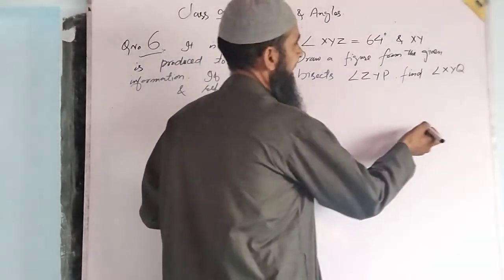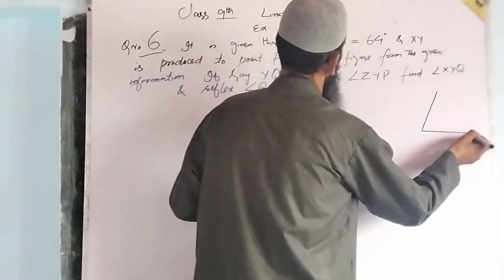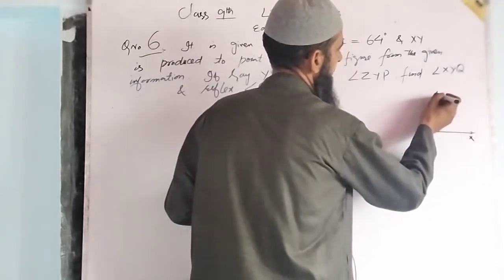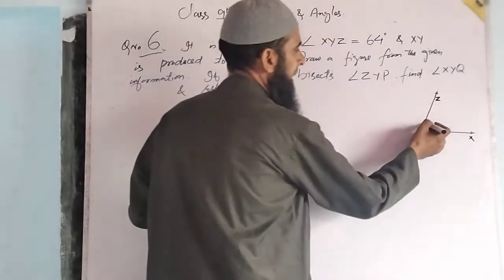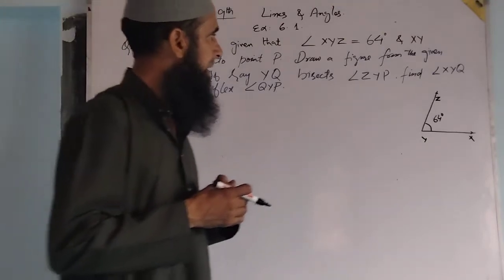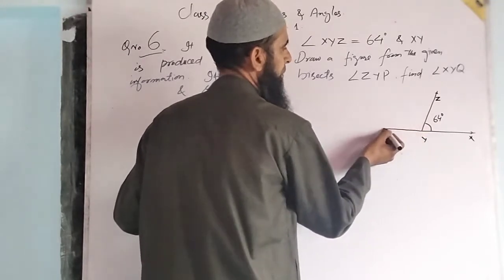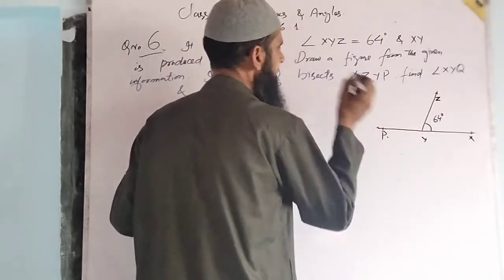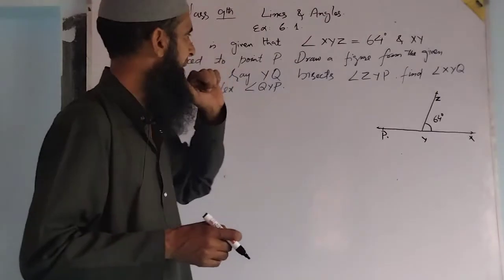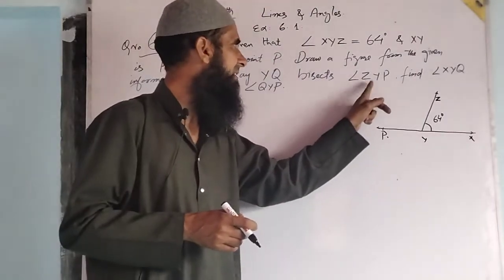Here we have angle XYZ. It is given that angle XYZ is of measure 64 degrees, and XY is produced to point P. Draw a figure from the given information.